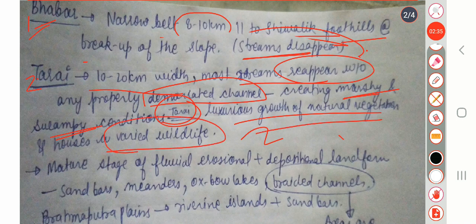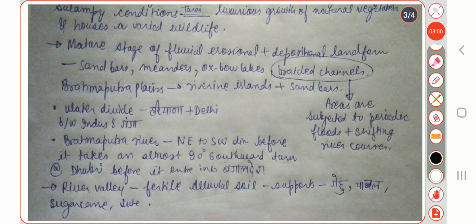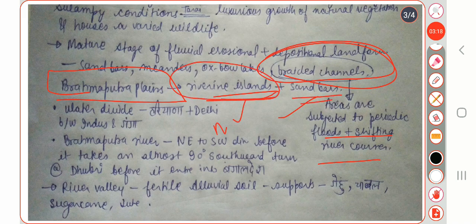The mature stage of alluvial erosion and depositional landforms includes sandbars, meanders, oxbow lakes, and braided channels. In the Brahmaputra plains, areas subjected to periodic floods and shifting river courses result in riverine islands and sandbars. The most important riverine island here is Majuli, which is the largest riverine island in the world.